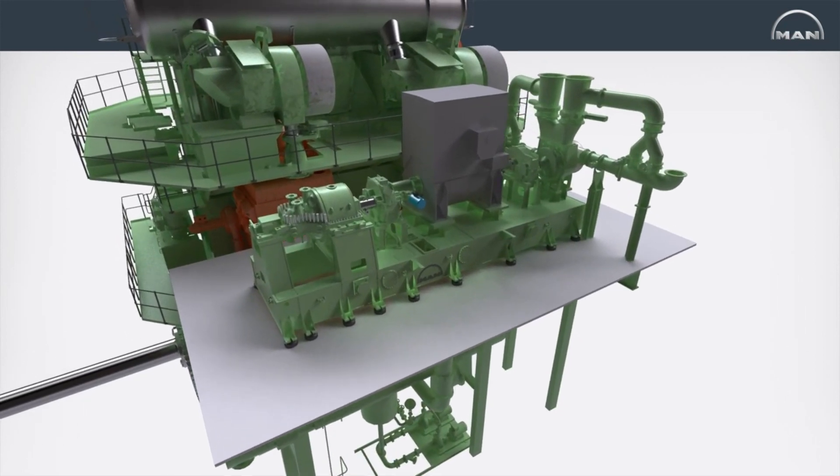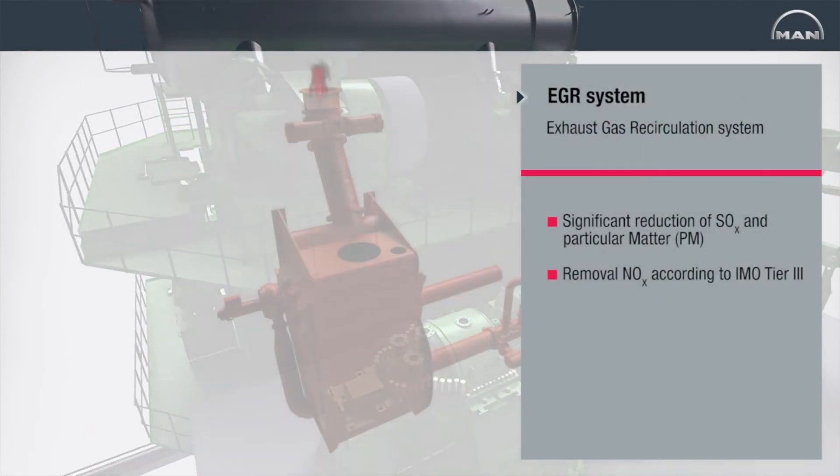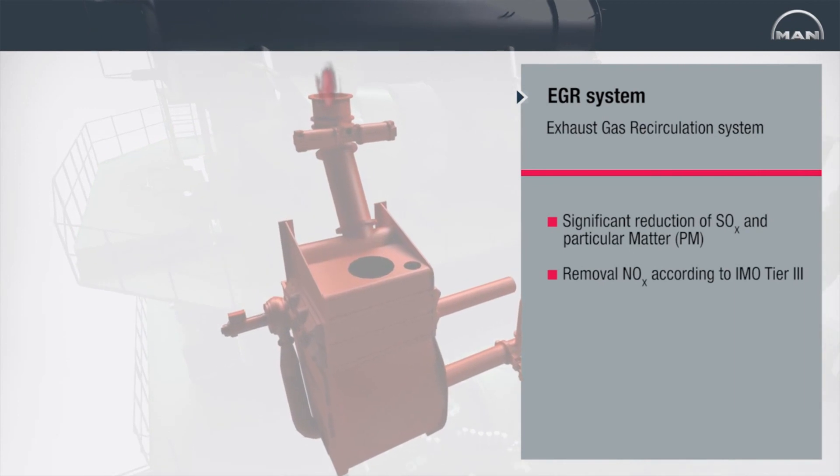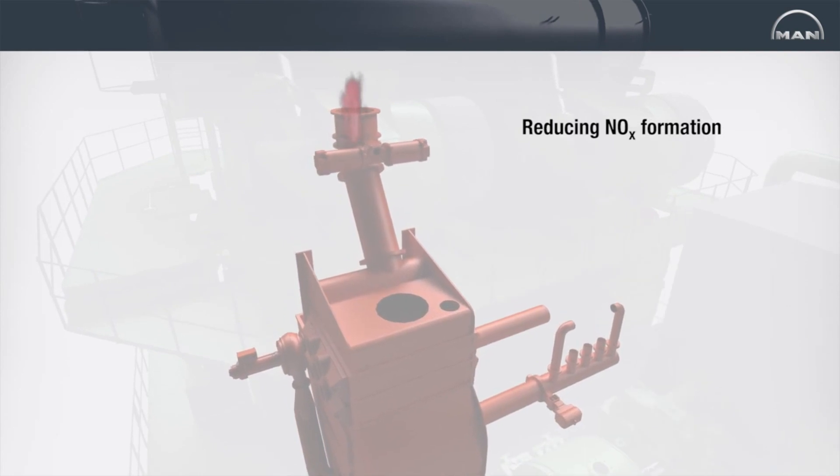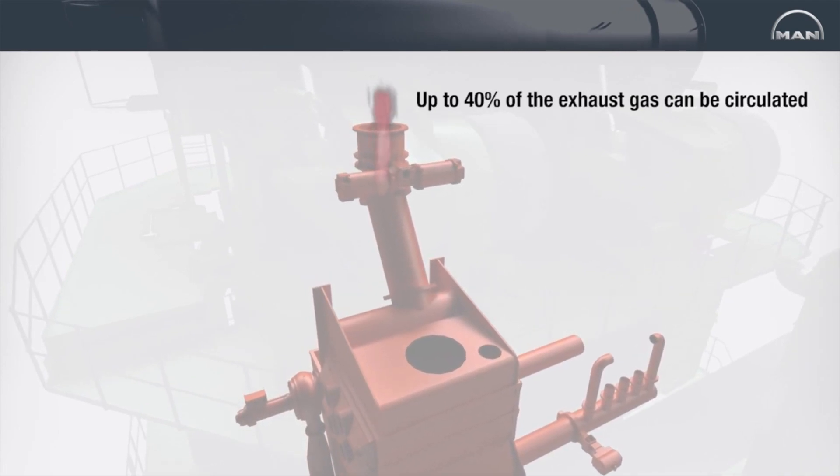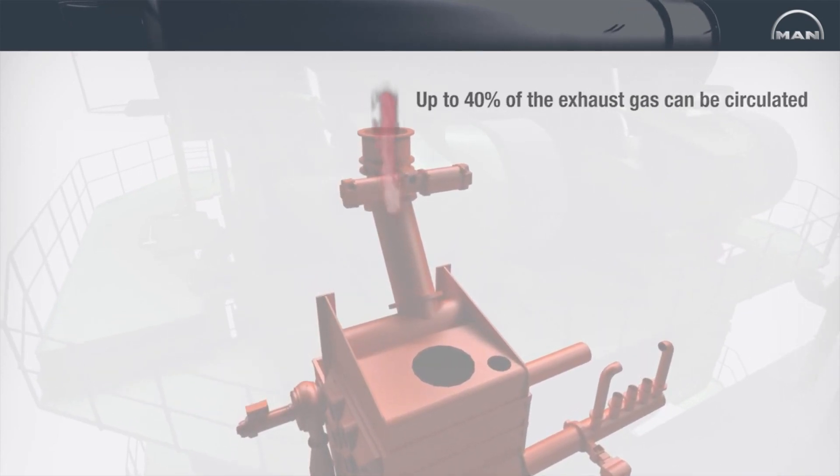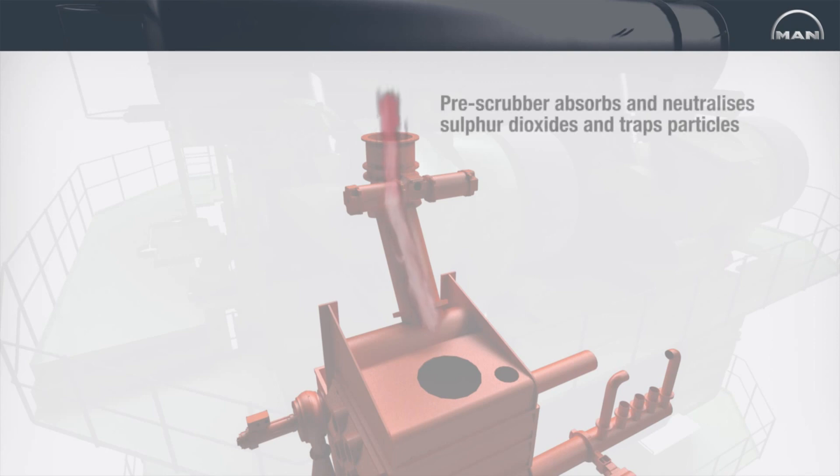The MAN diesel and turbo developed exhaust gas recirculation or EGR system is based on the principle of reintroducing a part of the exhaust gas back into the cylinder, thereby reducing NOx formation by lowering the peak temperature in the cylinder. In this way, up to 40% of the exhaust gas can be circulated through the EGR string of the system. The exhaust gas in the EGR string is first cooled down from 200 to 500 degrees Celsius to around 80 degrees Celsius by means of a pre-scrubber that absorbs and neutralizes sulfur dioxides and traps particles.